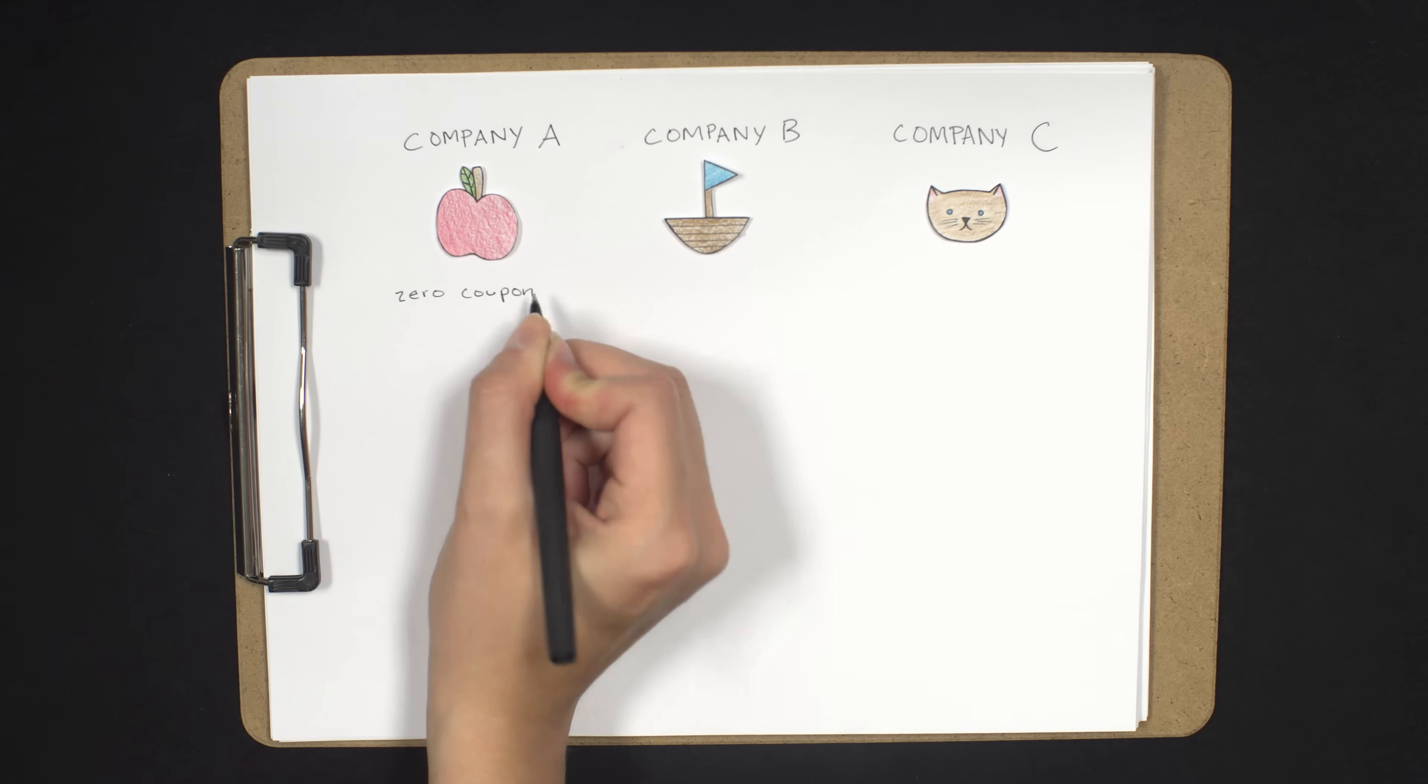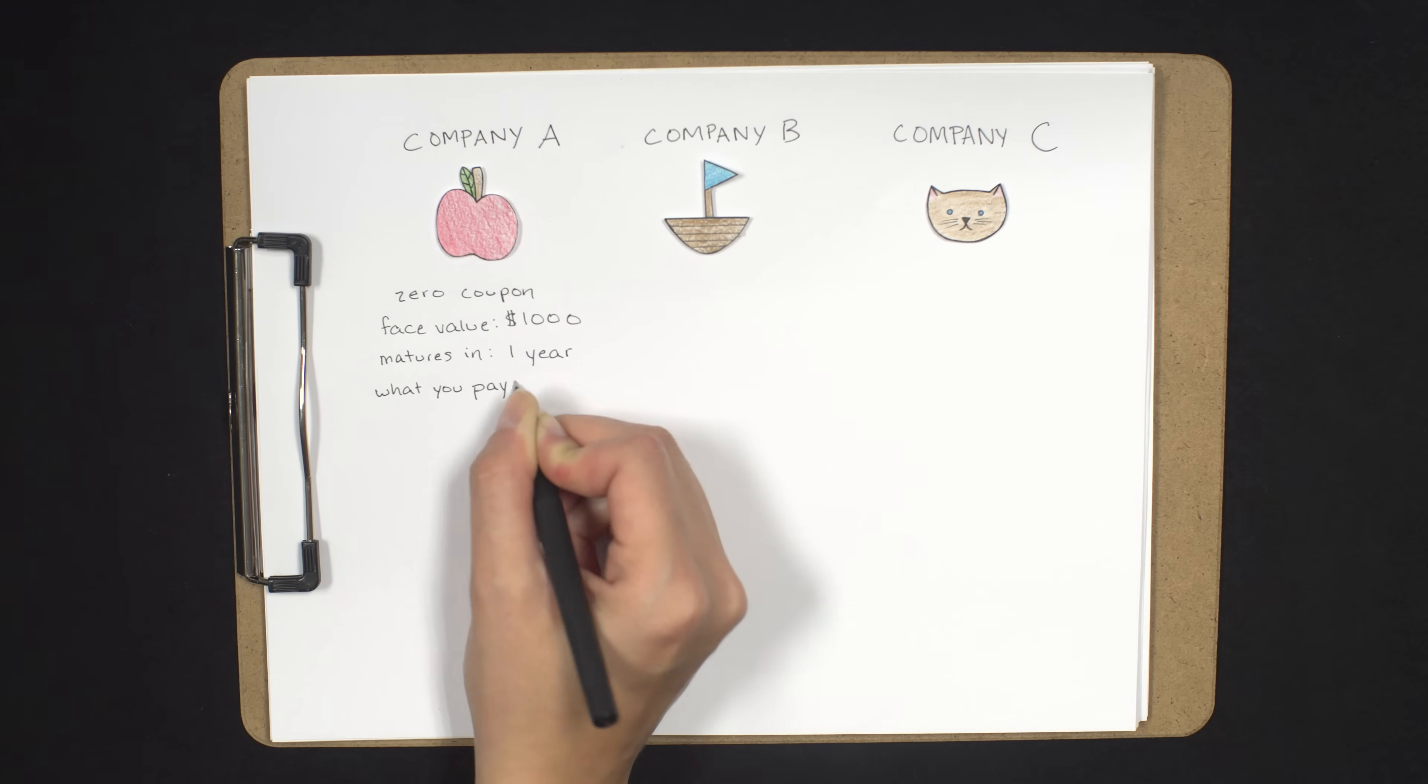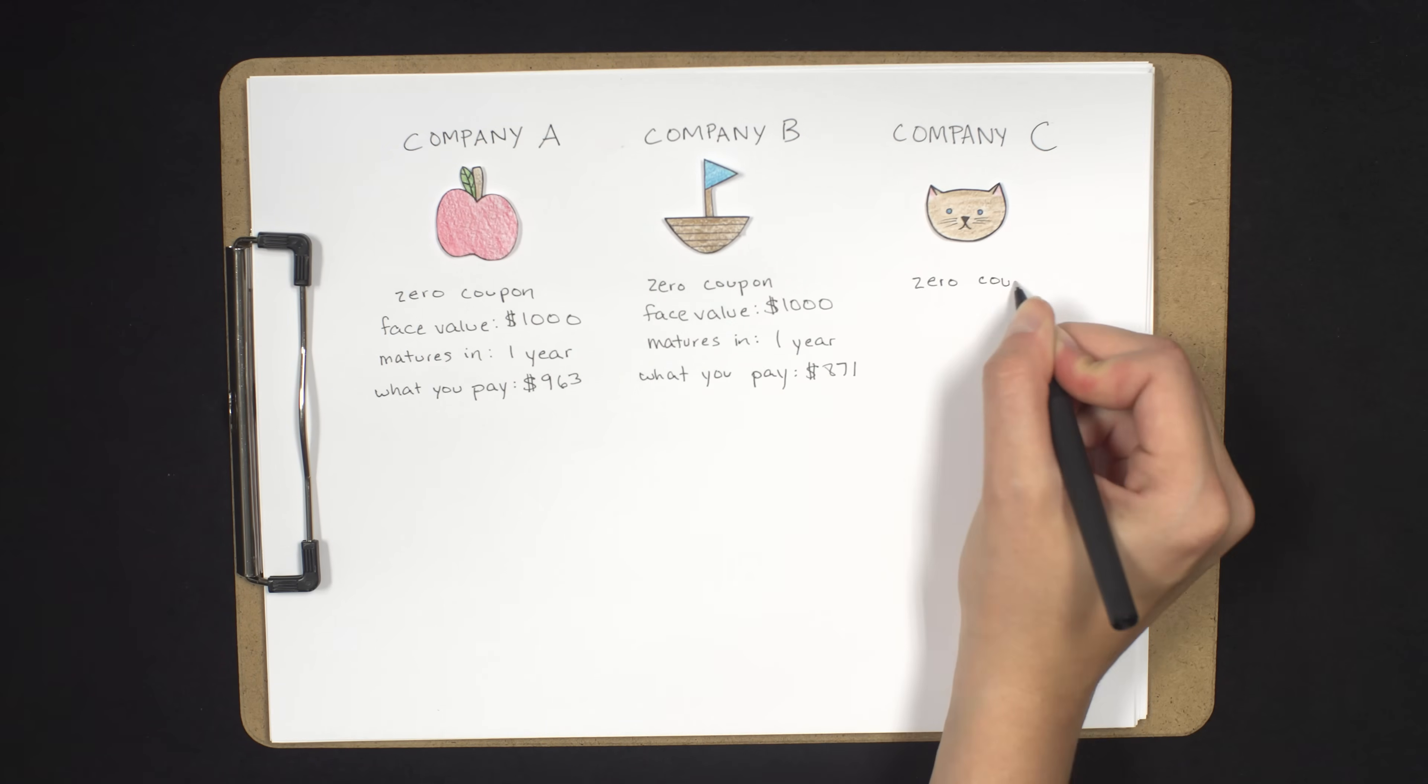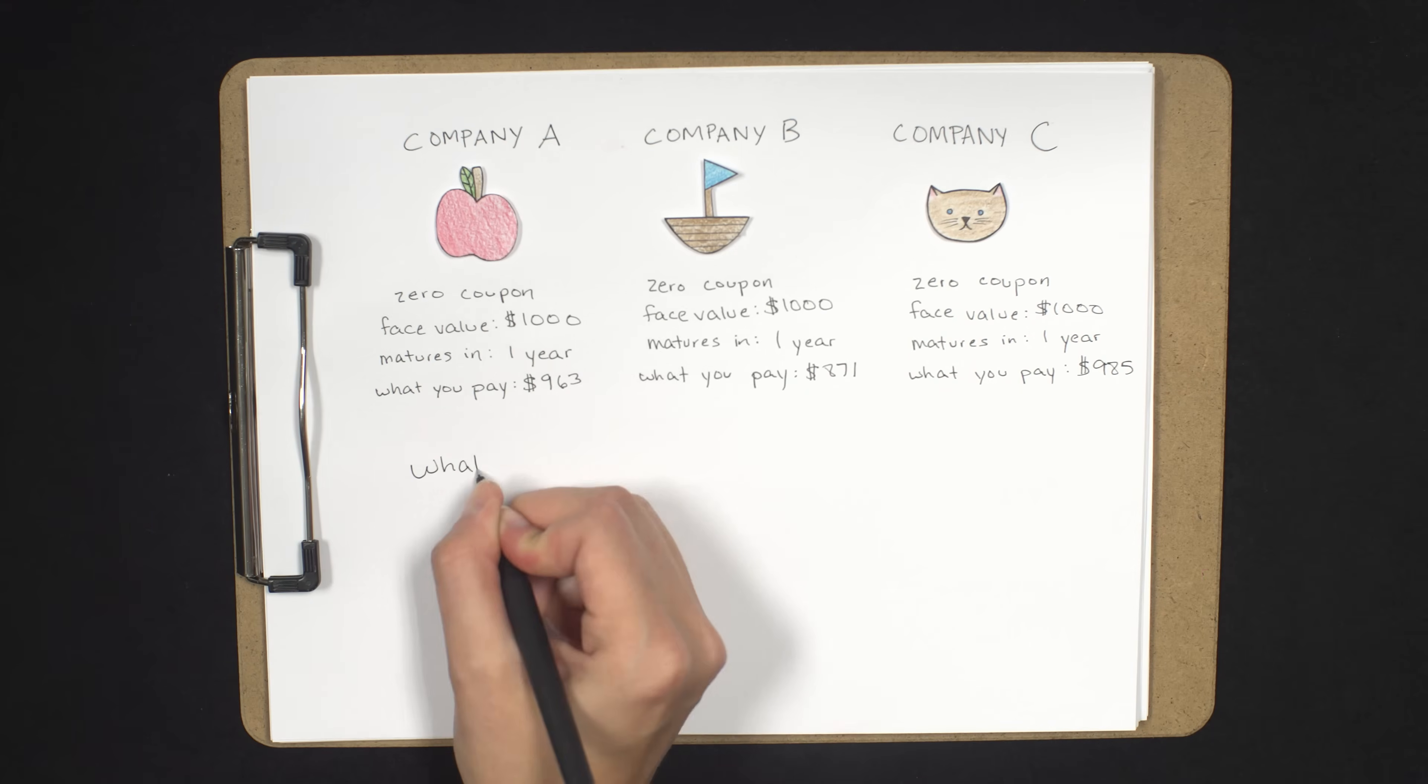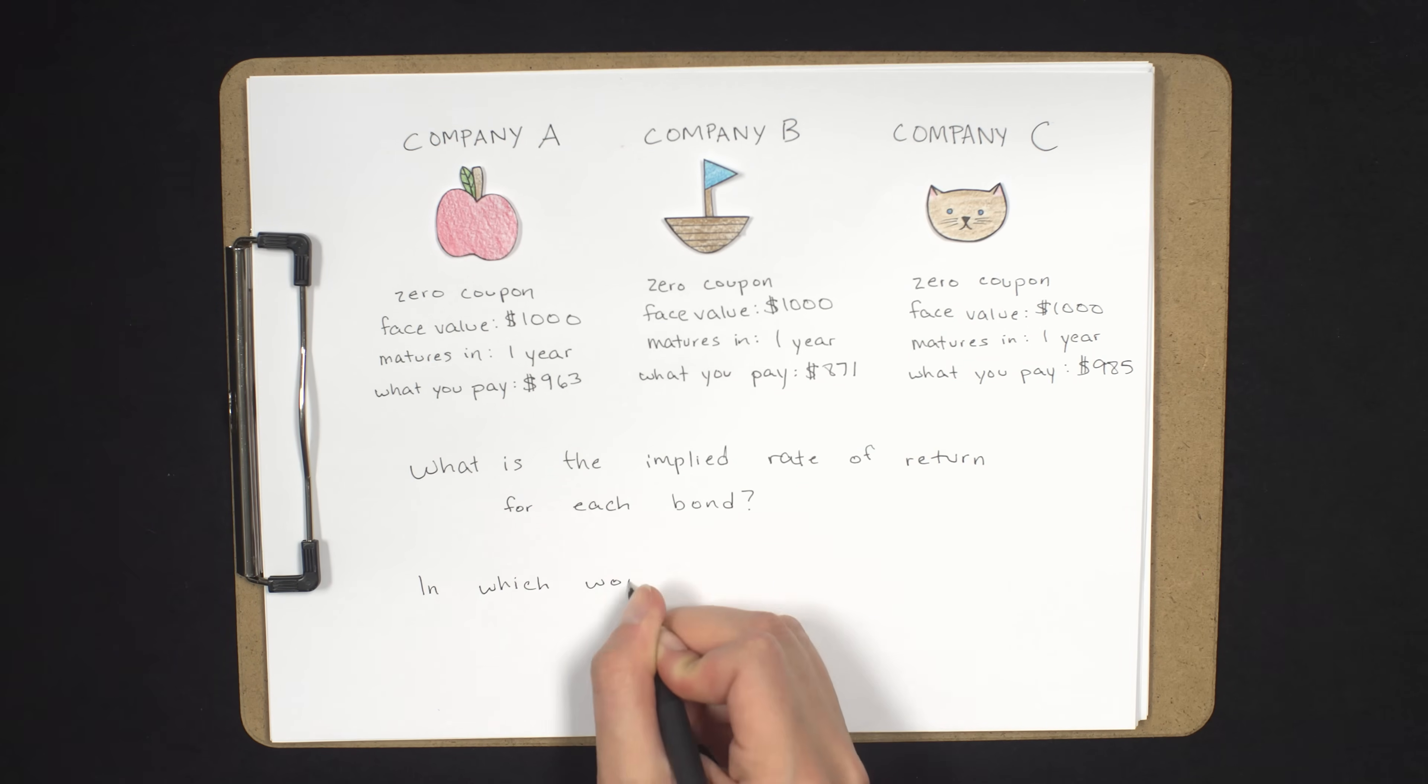Company A is offering a zero-coupon bond with a face value of $1,000 to be repaid in one year at a price of $963 today. Company B has the same face value and maturity date, but sells for $871 today. And Company C also has the same face value and maturity, but sells for $985. What is the implied rate of return or the yield of each bond? In which would you rather invest?